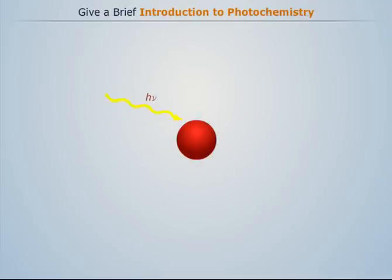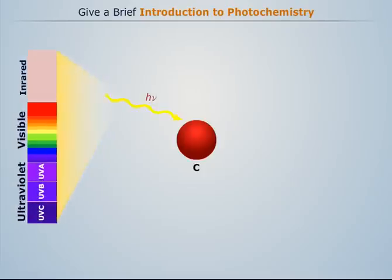Photochemistry is mainly involved with rates and mechanisms of reactions caused by exposure to radiant energy in the ultraviolet and visible range of spectrum, which ranges from 2000 angstrom to 8000 angstrom wavelength.